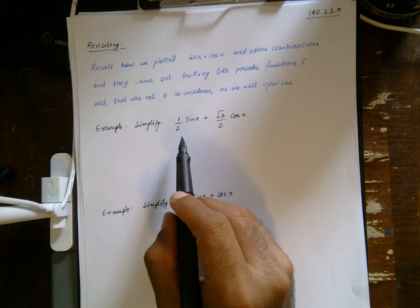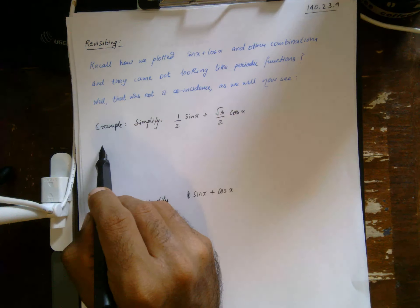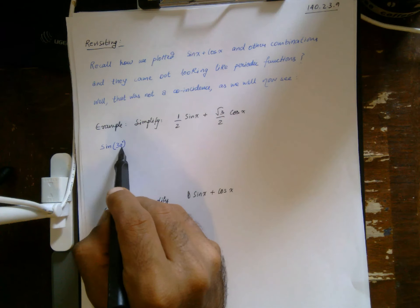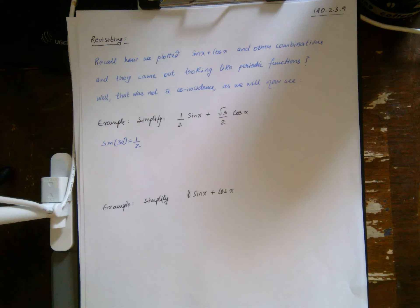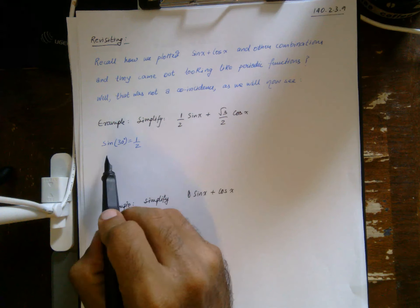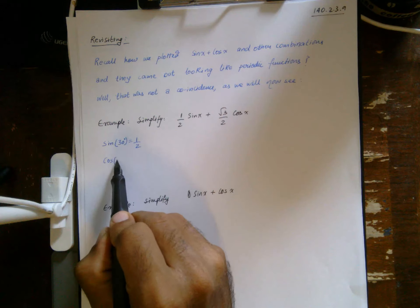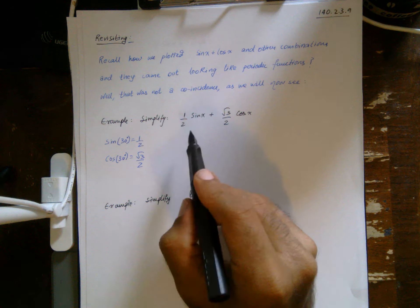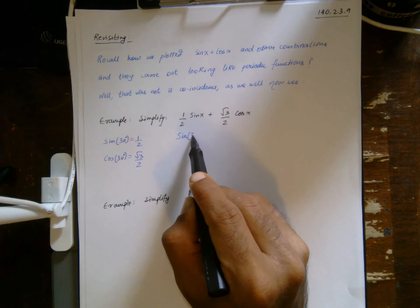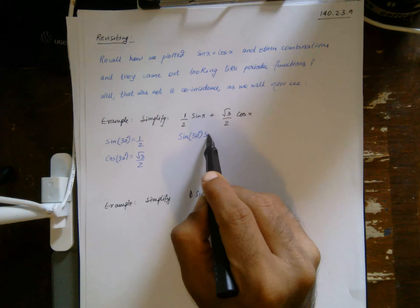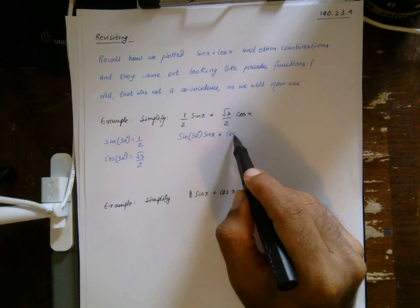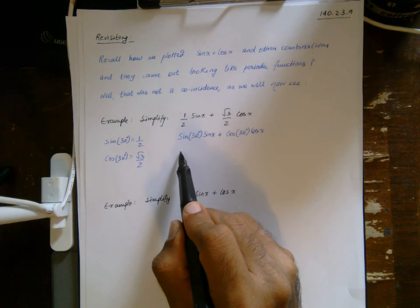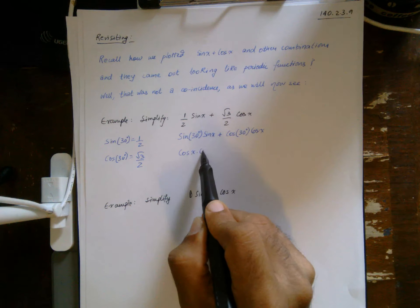However, we are going to use some additional information: the trig values for very specific angles which we know, like sine 30 is one half, and cosine 30 happens to be root 3 over 2. Which means I can rewrite this as sine 30 sine x plus cosine 30 cosine x.